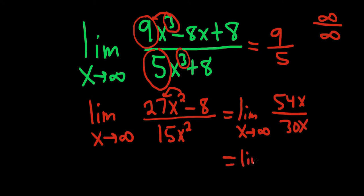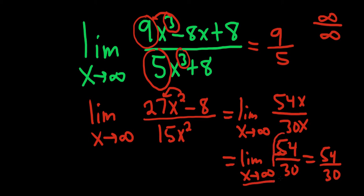Repeatedly using L'Hopital's. The derivative of 54x is 54. The derivative of 30x is 30. At this point, you cannot use L'Hopital's anymore, right? It's not infinity over infinity. So this is just 54 over 30. It's a constant. So nothing happens to 54 over 30. As x approaches infinity, 54 over 30 is always just 54 over 30.